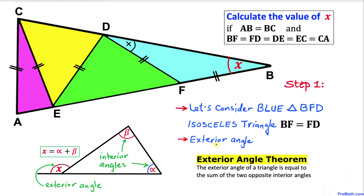Now we are going to talk about a really crucial topic: exterior angles. The exterior angle theorem states that the exterior angle of a triangle is equal to the sum of the two opposite interior angles. In this figure, alpha and beta are two interior angles, X is an exterior angle, and X is always equal to alpha plus beta.